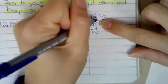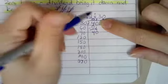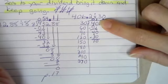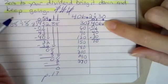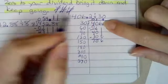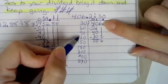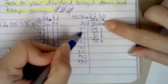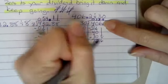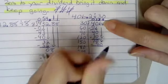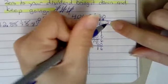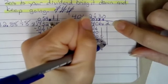So, 4 is less than 30, so I bring down my 0, 30 goes into 40 one time. 1 times 30 is 30. We subtract and get 10. 10 is less than 30. We bring down the 6. 30 goes into 106, that's too much.